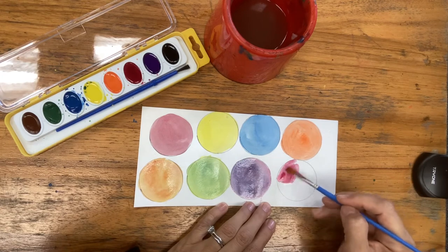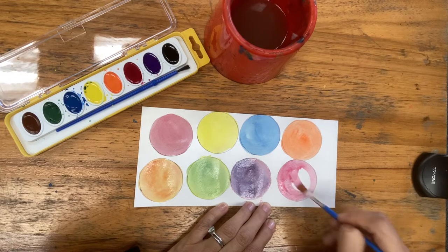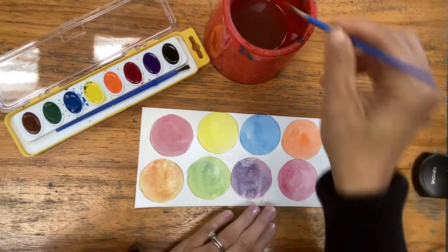So then I'm going to set these to the side to dry because we're going to move on to our 9 by 12 piece of white paper to draw our gumball machine.